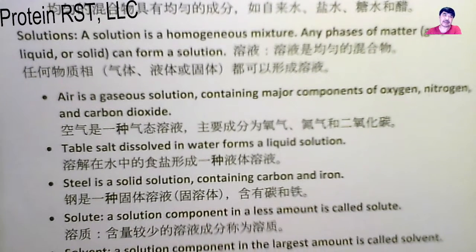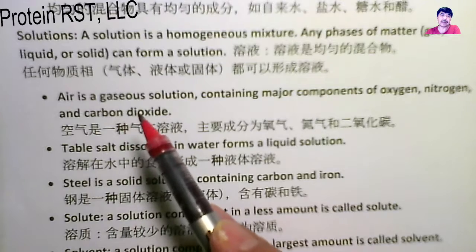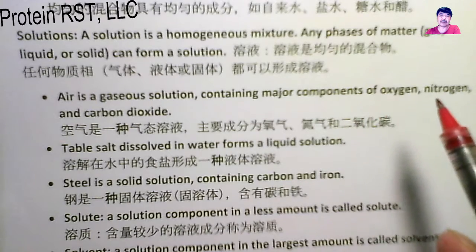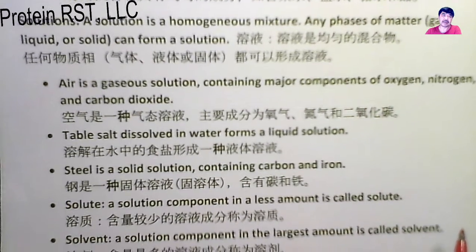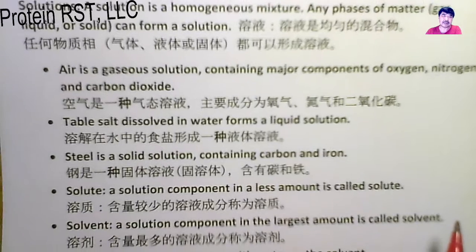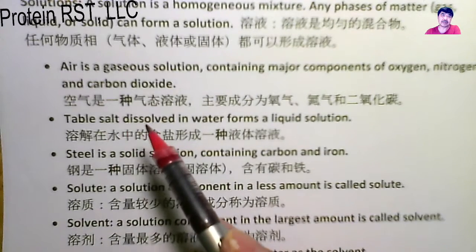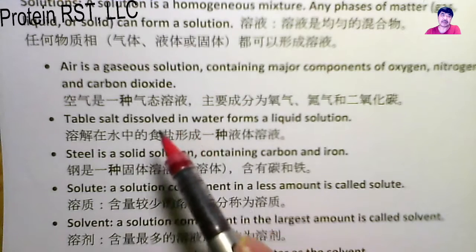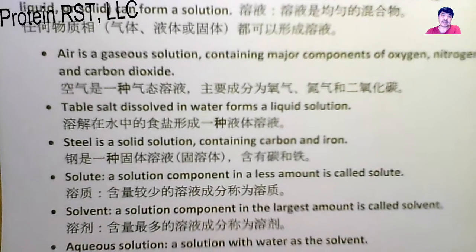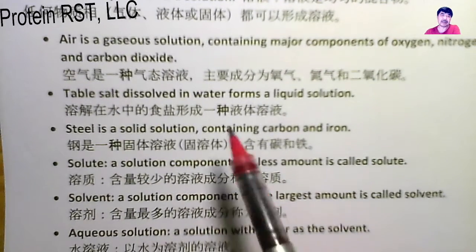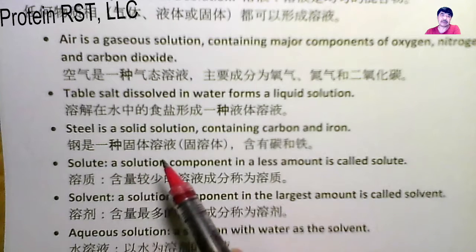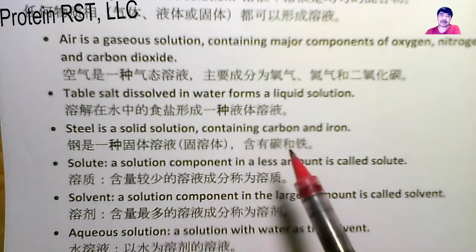Let's take a look at some examples. Air is a gaseous solution containing major components of oxygen, nitrogen, and carbon dioxide. 空气是气态溶液，主要成分为氧气、氮气和二氧化碳。 A second example is table salt dissolved in water, forming a liquid solution. 溶解在水中的食盐，形成一种液体溶液。 Next, steel is a solid solution containing carbon and iron. 钢是一种固体溶液，包含碳和铁。